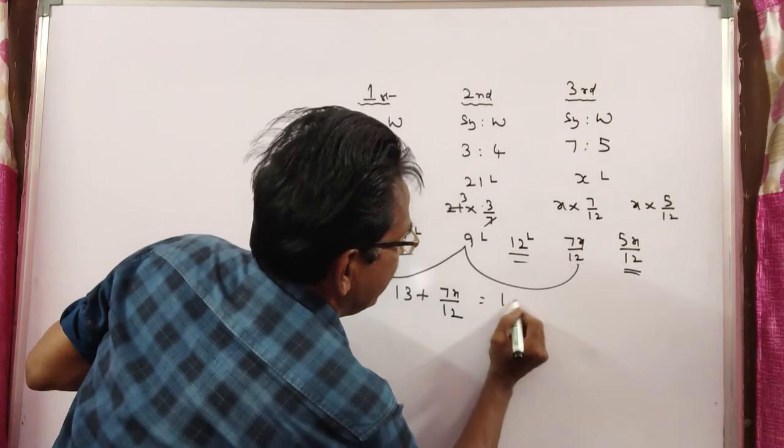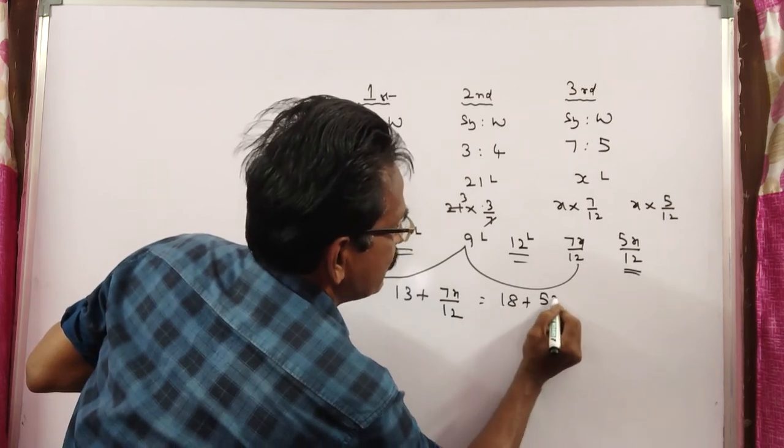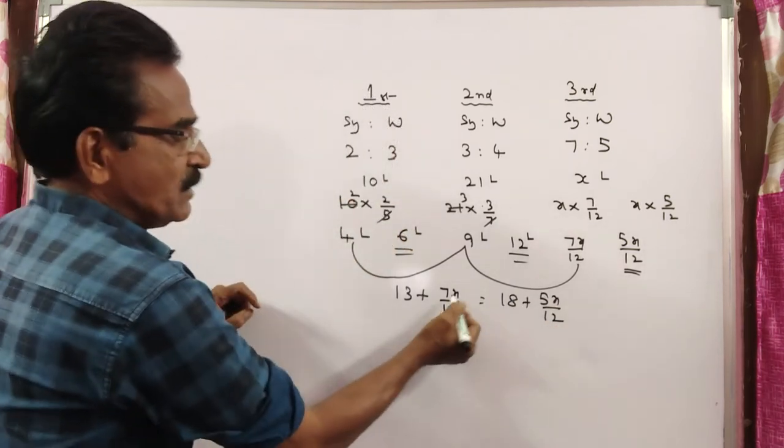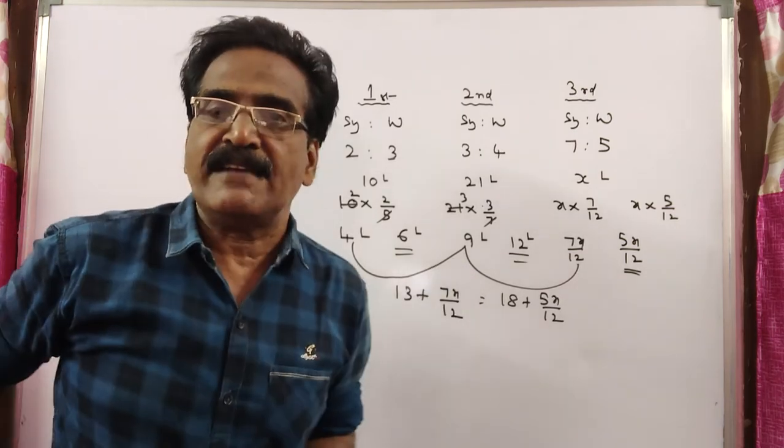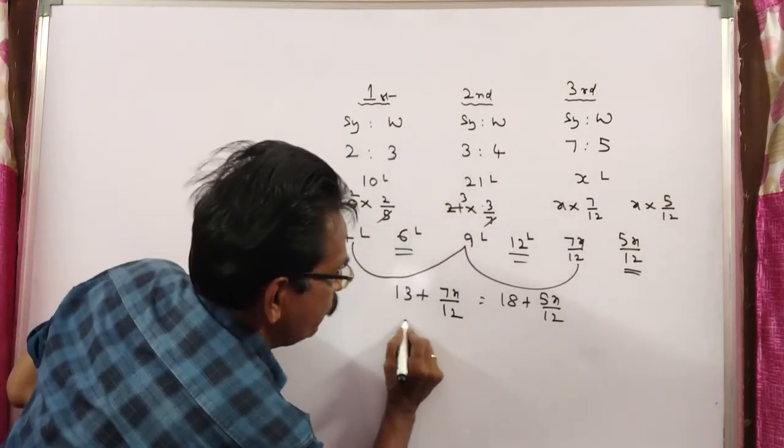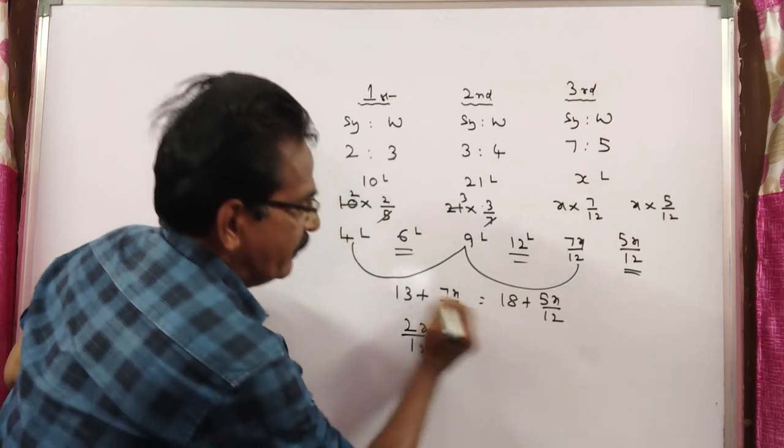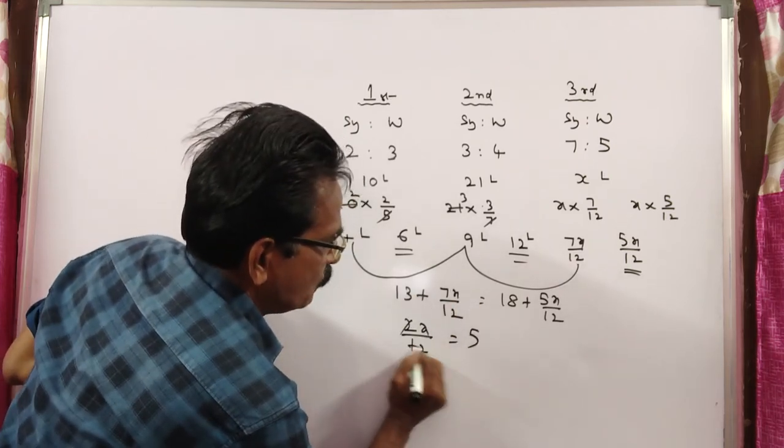6 plus 12, 18 plus 5x by 12. So 7x by 12 minus 5x by 12, that is 2x by 12, is equal to 18 minus 13, 5. 2, 6, 6 times 30.